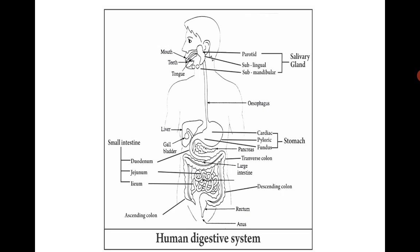The third and last part of the small intestine is the ileum. It is about 3.5 meters long, longer than the jejunum by about 1 meter. The ileum is highly coiled and slightly broader than the jejunum. The ileum opens into the cecum of the large intestine at the ileo-cecal junction, which is the meeting point of the small intestine and large intestine.